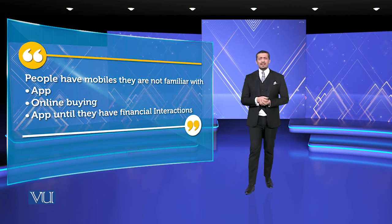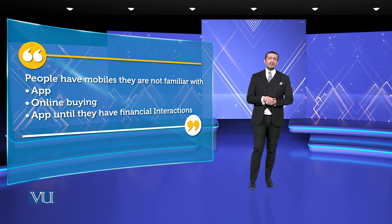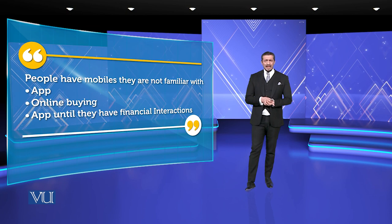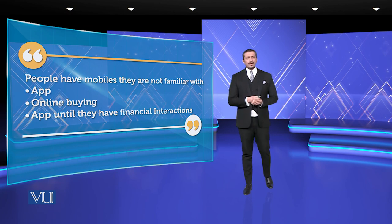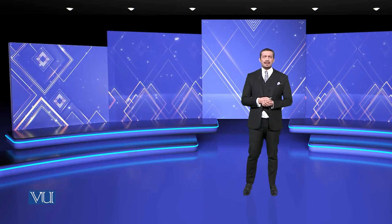People have mobiles but they are not familiar with apps — they don't want to have financial interaction, which means banks can relate. Think of scanning, paper money, bank visa card, debit card — a cashless society — which means cash on delivery will be difficult, and you can try to get rid of it.